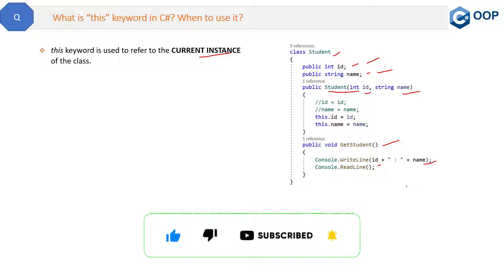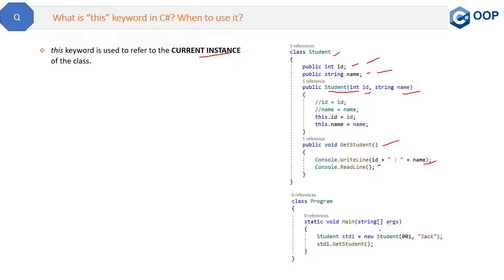So how will we use it? We will create the object of this class in some other class, like this. Here you can see we are creating the object of the Student class std1, and then we are passing these two parameters. Because this class has a parameterized constructor, not a default constructor, we must pass these two values. These values will be assigned to these parameters.